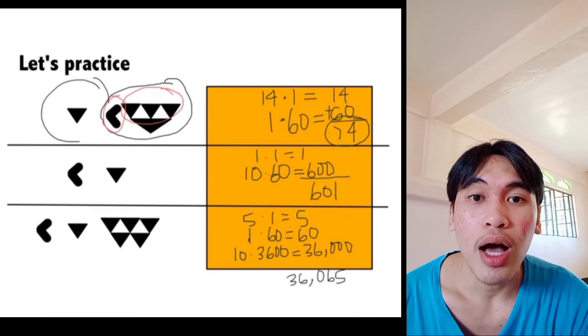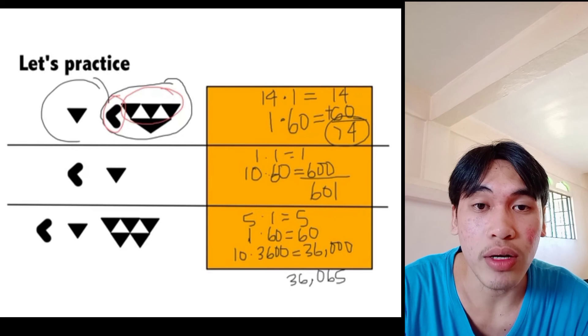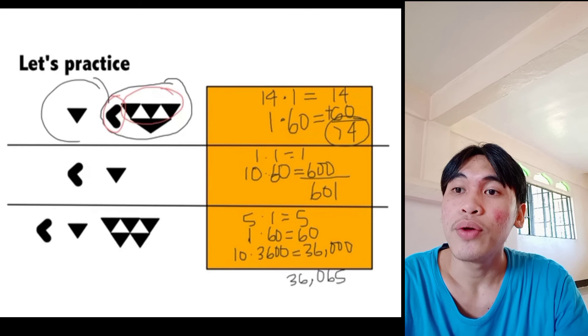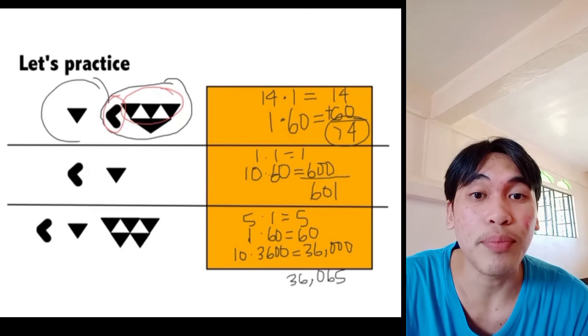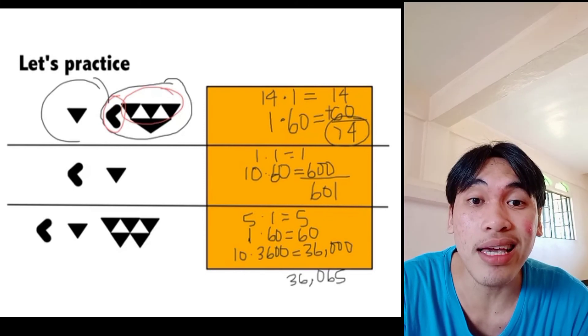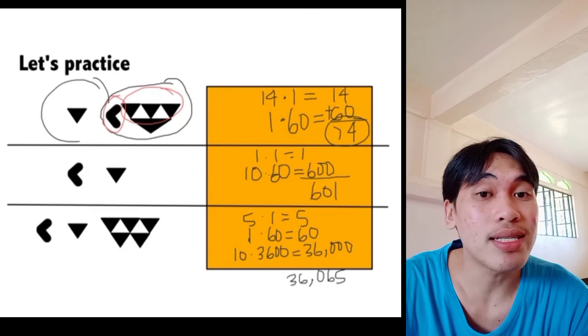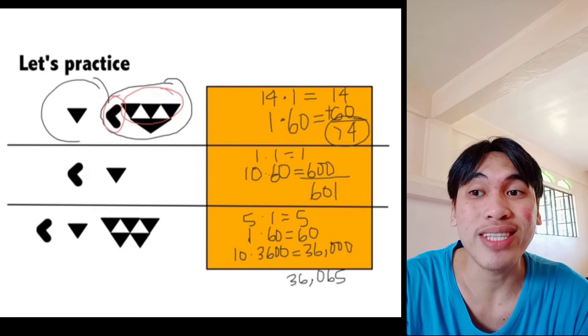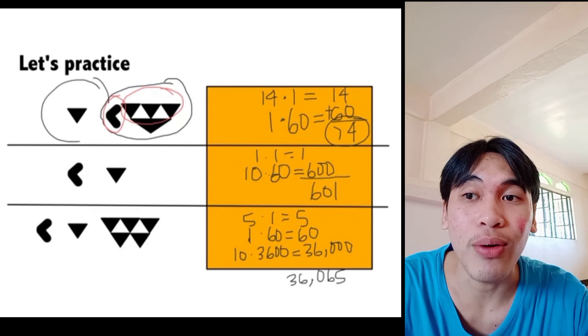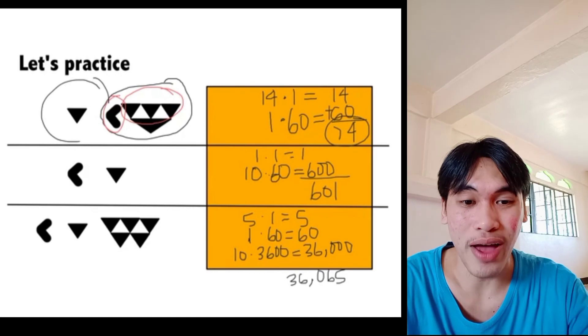First is the 5 triangle downward. So, it is 5 times 1. It is 5. The next is a triangle. So, 1 times 60 is 60. So, it is 65. Then, this less than is part from the 1 triangle. It has a place value 60 squared. Or, 60 times 60 is 3,600. This less than is 10. So, 10 times 3,600 is 36,000. We have the total now. It becomes 36,065.